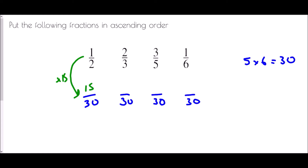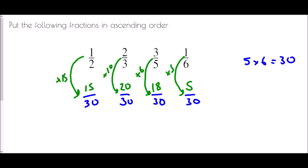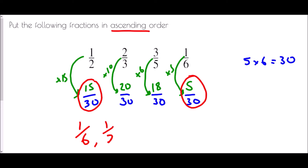How have I turned 2 into 30? Multiplied by 15. Three into 30 is multiplied by 10. Five into 30 is times 6. Six into 30 is multiplied by 5. Now in ascending order, the smallest is five-thirtieths (one-sixth), then fifteen-thirtieths (one-half), then eighteen-thirtieths (three-fifths), and finally twenty-thirtieths (two-thirds).